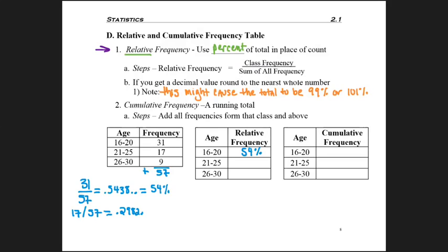And now I continue that process. The second class had a frequency of 17 divided by 57, gave me a percentage of 30, and that's what I'll fill into the table. And my last class had a frequency of 9 for a grand total of 16%. And in this case, I luck out because it does total 100%.